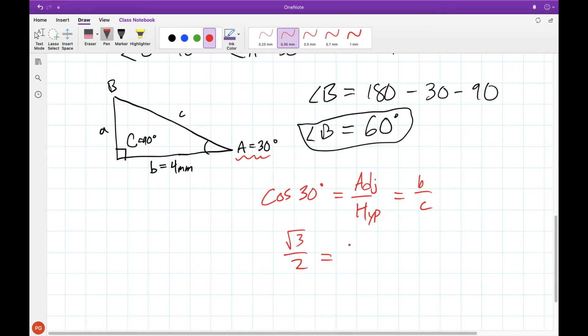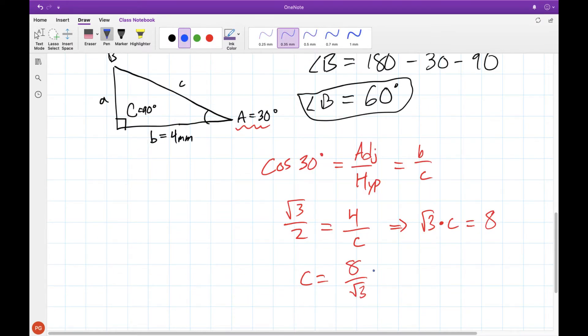Once you have this we can do a little bit of rearranging. Multiply both sides by C. Multiply both sides by 2. Divide both sides by root 3 and then we can rationalize this to get our final answer.